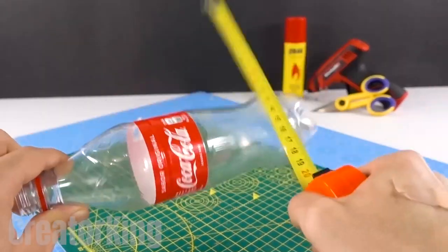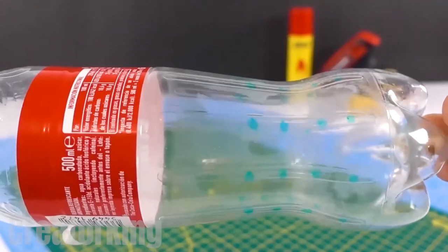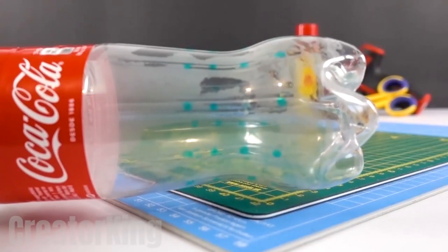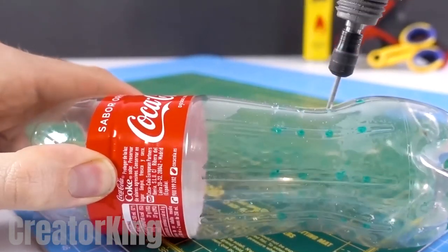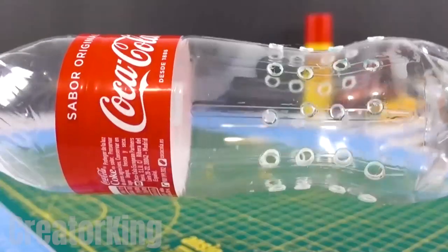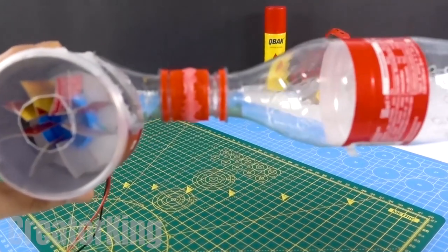Now for the rest of the bottle with the help of a measuring tape and a pen we'll mark dots approximately every two centimeters and then we'll turn it into a strainer with our drill. This will act like a depositing area for our vacuum.